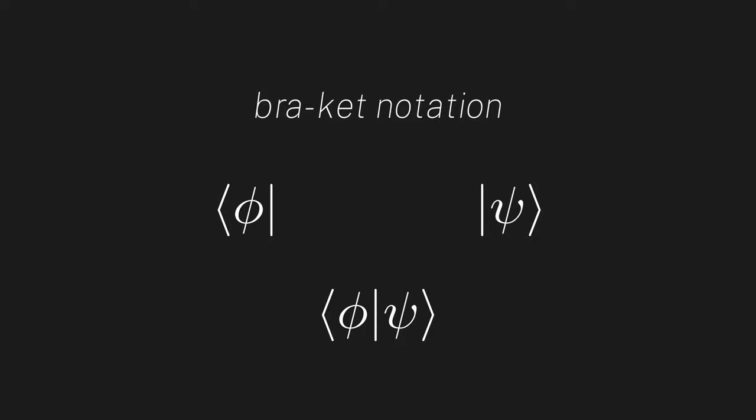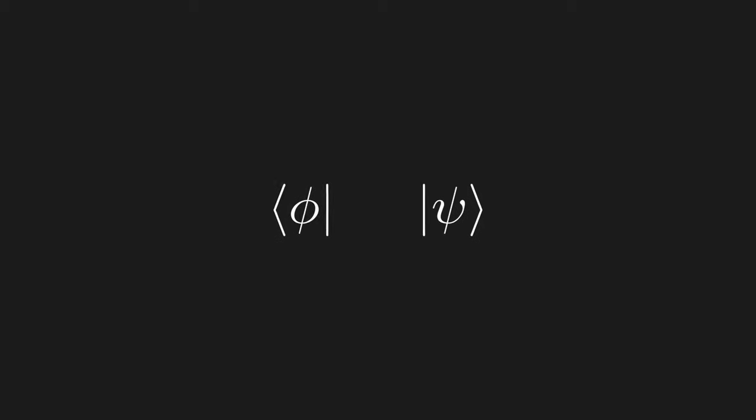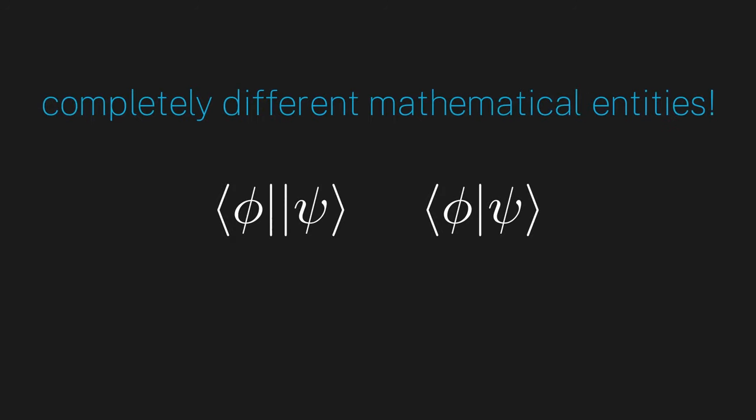So why is this notation so powerful? As you can see, it has the Riesz representation theorem baked right into it. You can break apart inner products and put together bras and kets however you please, and you can be rest assured that whatever you get still makes mathematical sense, all because of the Riesz representation theorem. I mean, really think about this. Although a bra and the inner product are formally completely different mathematical entities, bra-ket notation makes their connection absolutely seamless.